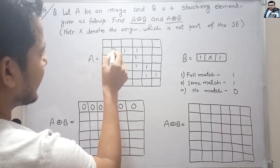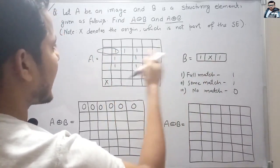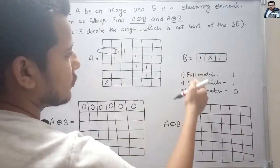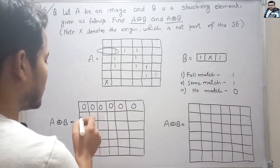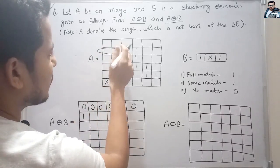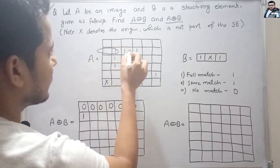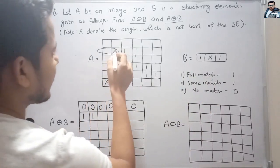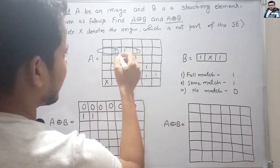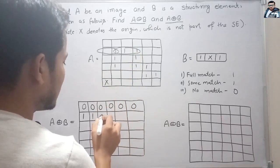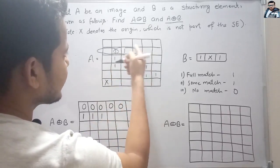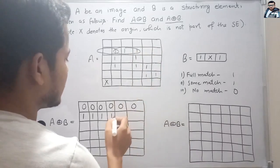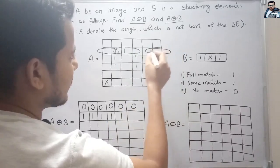When we put it here, this one matches with this one — some match — so we place 1 at X, that is the origin. So here 1. Now we shift one to the right, this one matches — some match — so we write 1. Now we place it again here, and then the first and third are matches, so again 1. Again we shift it here — also matching. Again we shift it here — this one is also matching. Now here nothing matches, so here 0.